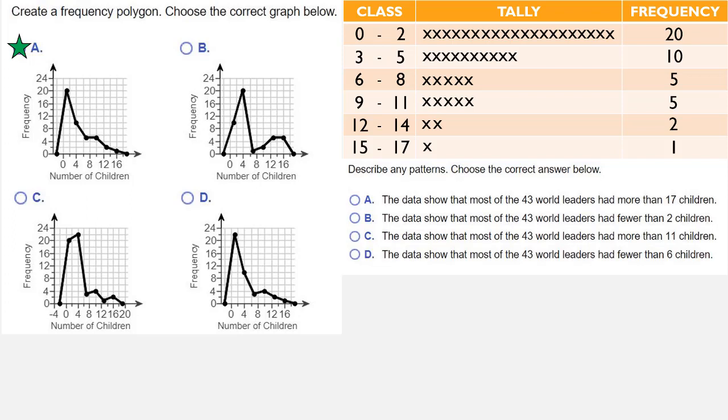So describe any patterns and choose the correct answer below. Does the data show that most of the 43 world leaders had more than 17 children? All of our data is for having 17 or fewer children. So the data does not show that.